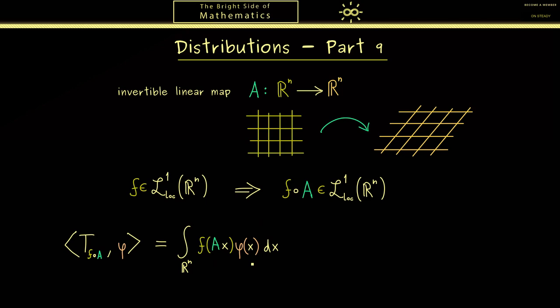However, we know we want to get to Tf, so to the original function f, which means we have to get rid of A. Indeed, in an integral we know we can do this by a substitution. In other words, the change of variables formula can help us here.